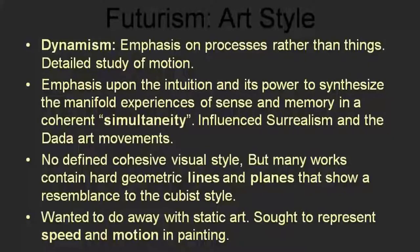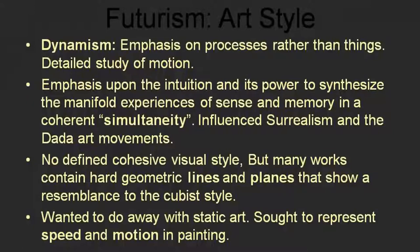Futurism did not want to define any cohesive visual style, but many works in Futurism contain in common hard geometric lines which bear a resemblance to the Futurist style. They wanted to do away with static art. There is hardly anything static in a Futurist painting or sculpture. In Cubist painting or sculpture, usually the subject matter would be static and the artist would play with the representations. In contrast, Futurist artists would always address an object or a figure in motion, because they sought to represent speed and motion in their work.